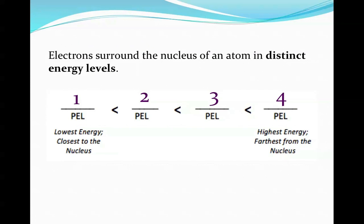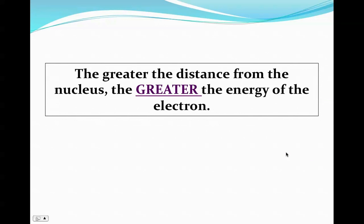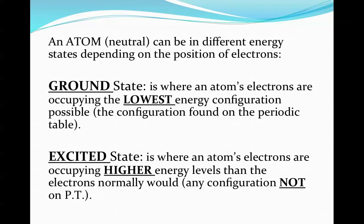So those different energy levels we name as the first energy level, the second, third, and fourth, and so on. They surround the nucleus of the atom in distinct amounts of energy. The first energy level is the lowest amount of energy and it's closest to the nucleus. As you move further away from the nucleus, they become higher in energy. Their distance increases from the central nucleus. So the greater the distance from the nucleus, the greater the energy of the electron.